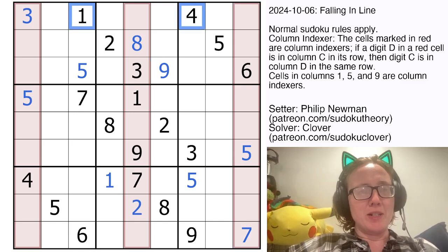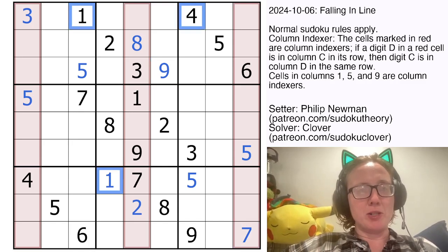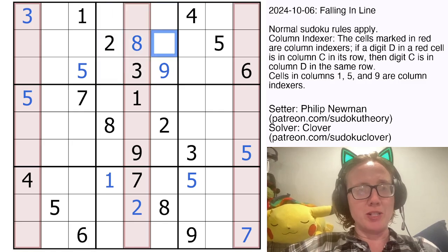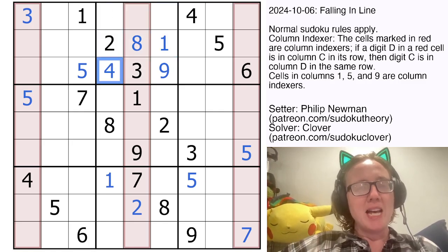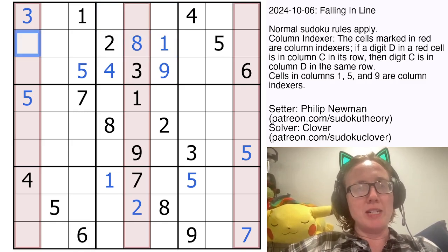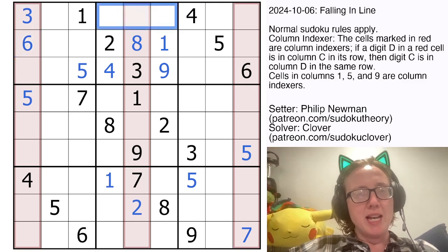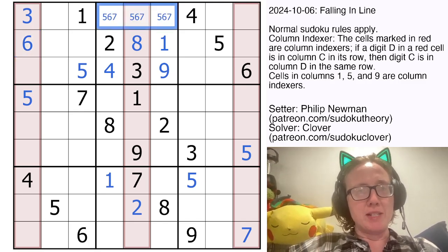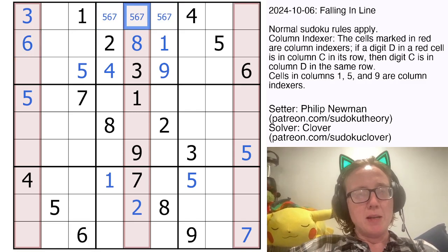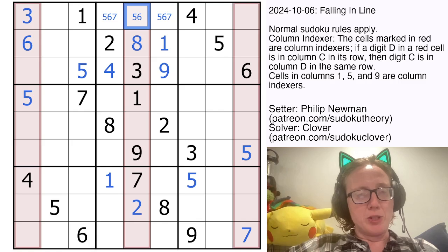So I have a one and a four here, and I have a one here. So the only position for one in the top central region is there, and then this is going to be my four. Because I just placed a one, that has to be indexed by the first column, so I'm going to place a six there. And then I'm going to jot down five, six, seven here, because those are the only remaining digits in the region.